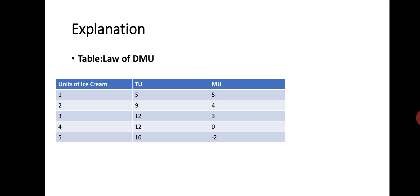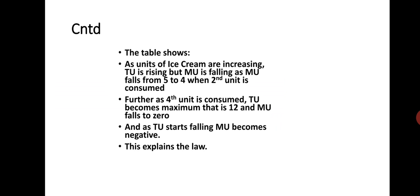Total utility becomes maximum at the fourth unit and marginal utility goes to 0. Further, if one more unit — the fifth unit — is consumed, total satisfaction goes on falling and marginal utility becomes negative. As you increase something more and more, your additional satisfaction goes on diminishing. As the number of ice cream units increase, total utility rises while MU falls. When total utility becomes maximum, MU becomes 0. When TU falls, MU goes below 0. This explains the law of DMU.